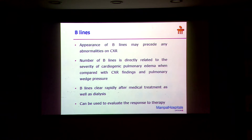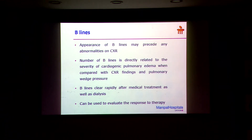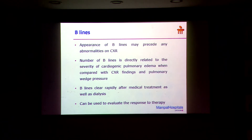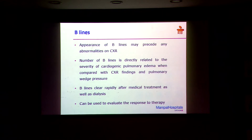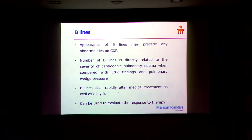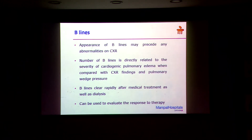B-lines are very sensitive. Before you can see any changes on a chest X-ray, you will start seeing changes on ultrasound in the form of B-lines. And it is directly related to the severity of the disease. For example, in cardiogenic pulmonary edema, you will have water in the lungs leading to B-lines. The more water in the lung, the more B-lines you will have. When you give treatment — either diuretics or positive pressure — as the fluid clears from the lung, the number of B-lines will come down, helping you judge the effectiveness of your treatment.